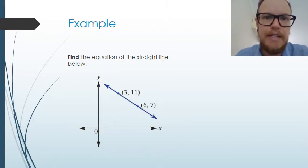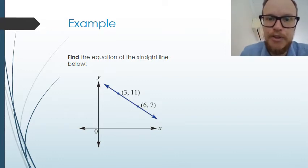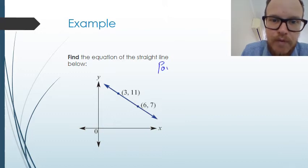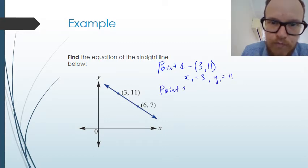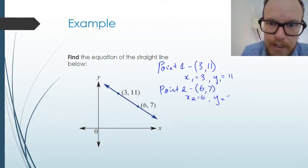So what we're looking at here is we're trying to find the equation of this straight line. So we've got our straight line here, we've got our two points. So we're going to have point 1, which is going to be 3, 11. That means x1 is equal to 3, y1 is equal to 11. Point 2, we've got here 6, 7. So it means x2 is equal to 6, y2 is equal to 7.